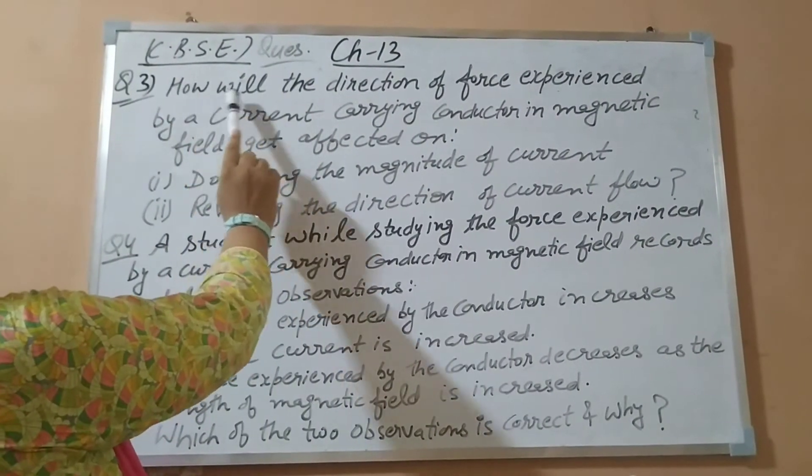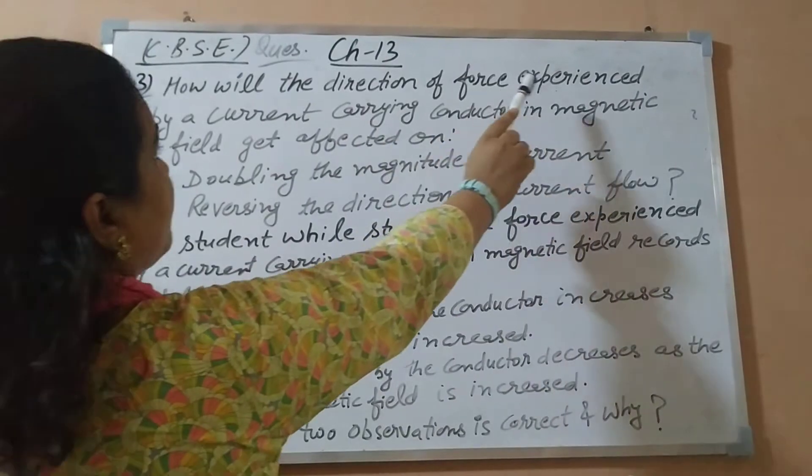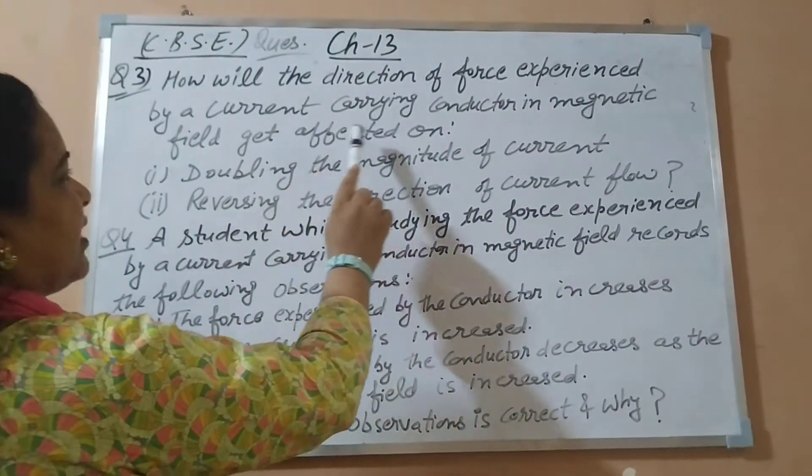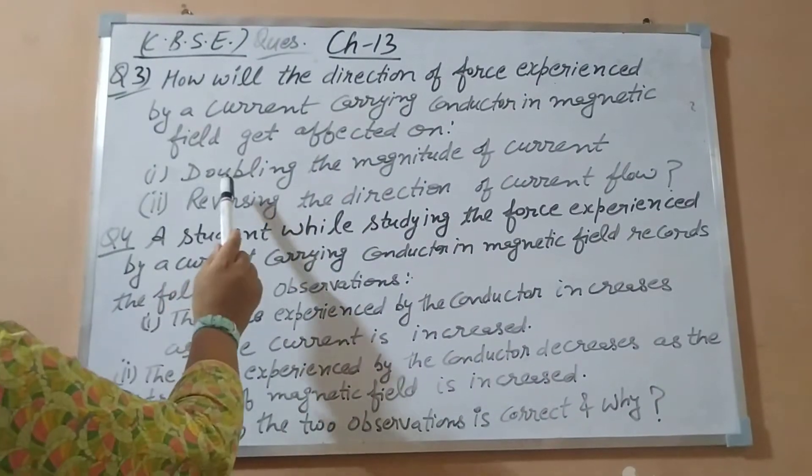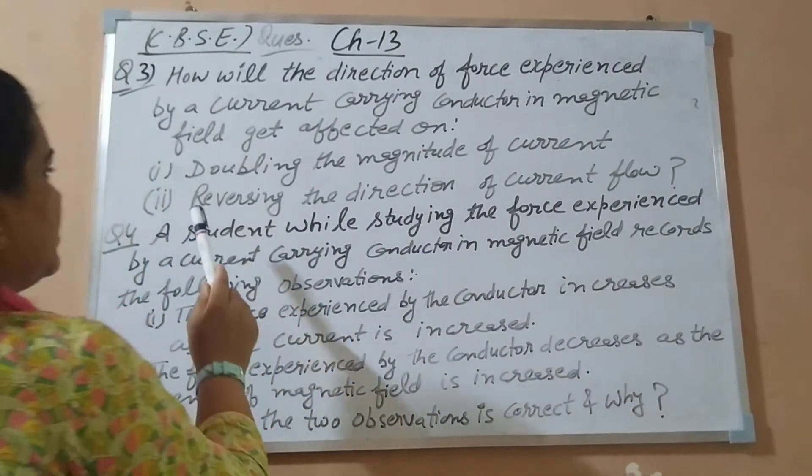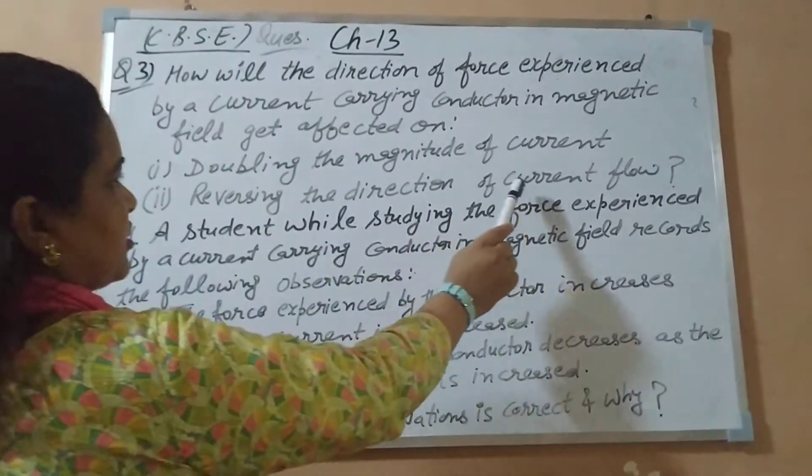How will the direction of the force experienced by a current carrying conductor in a magnetic field get affected on: what do you have to do? First, doubling the magnitude of the current. Second, reversing the direction of the current flow.